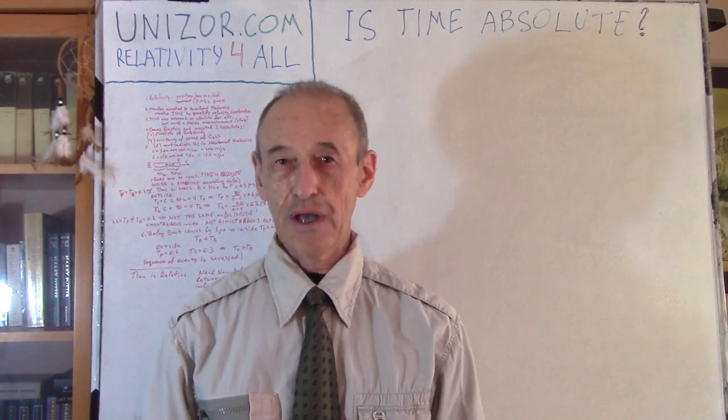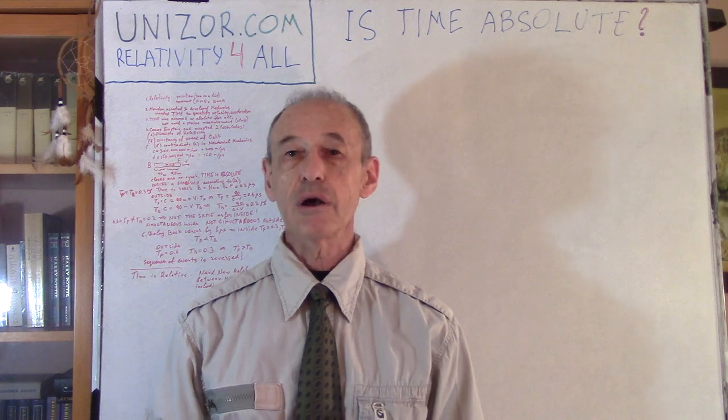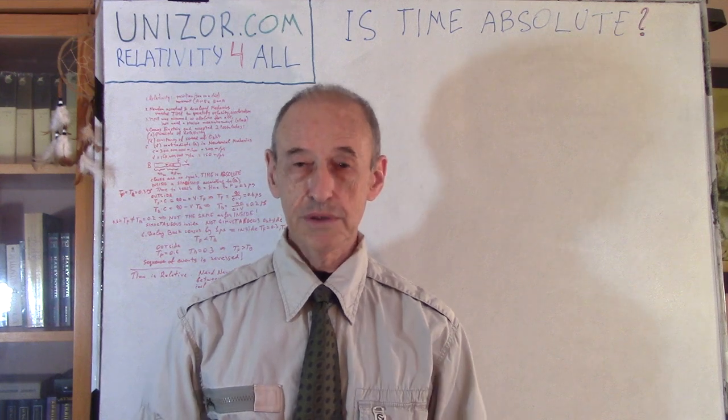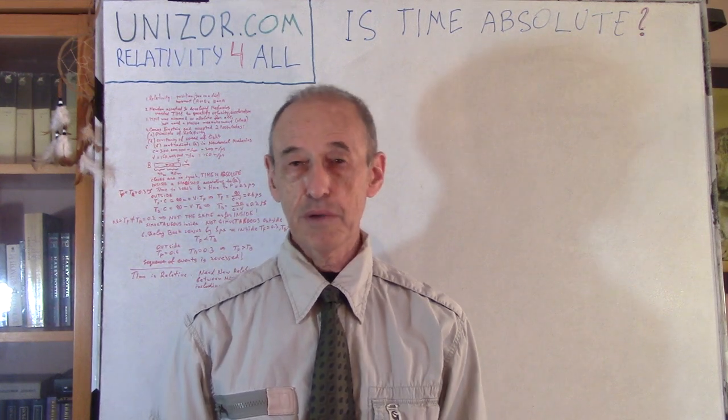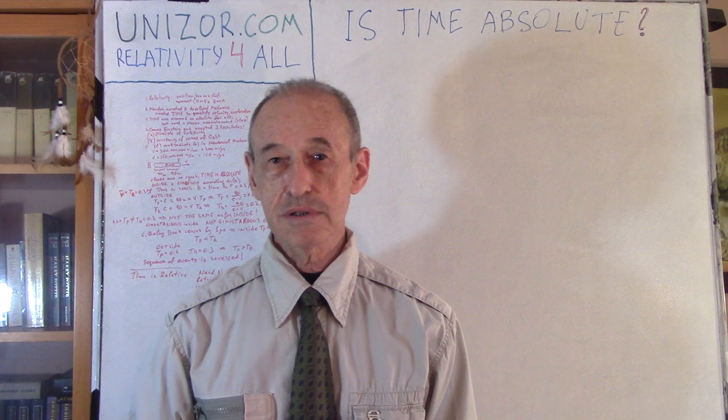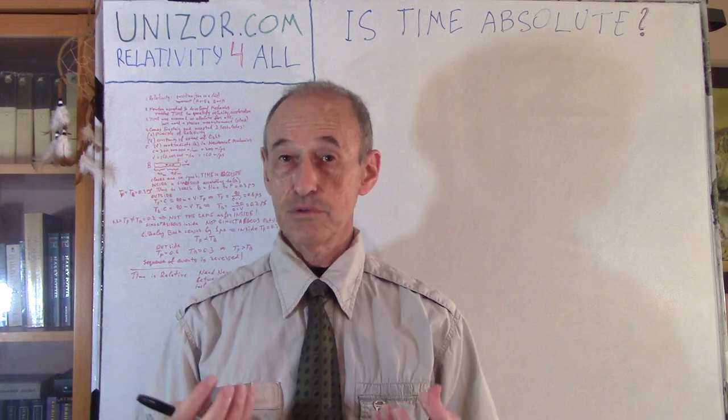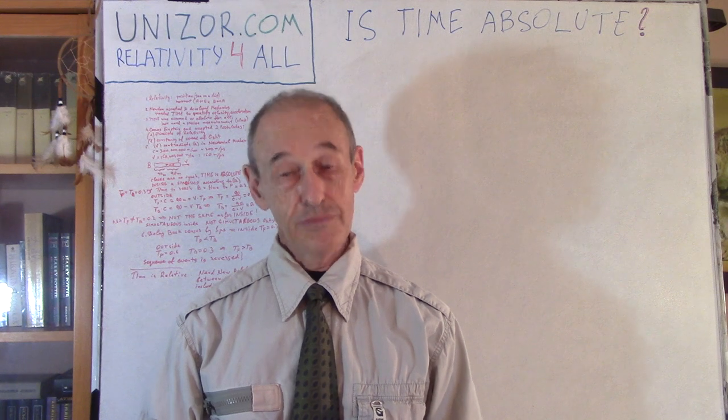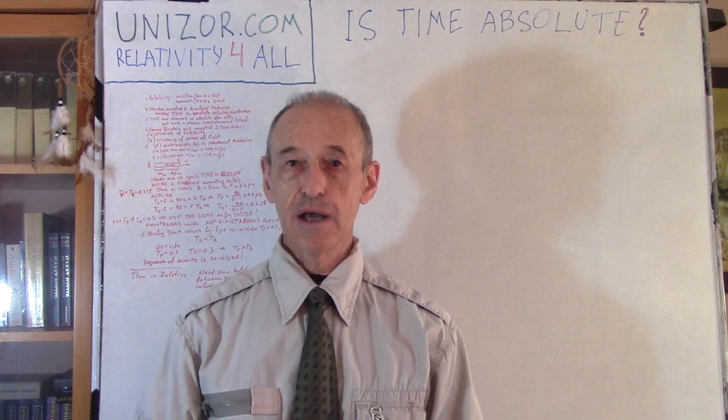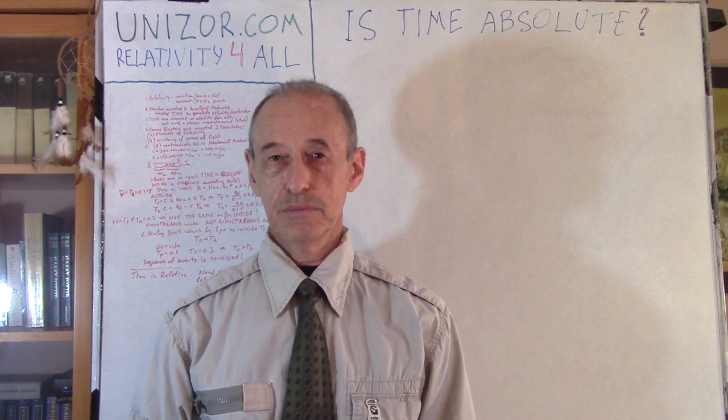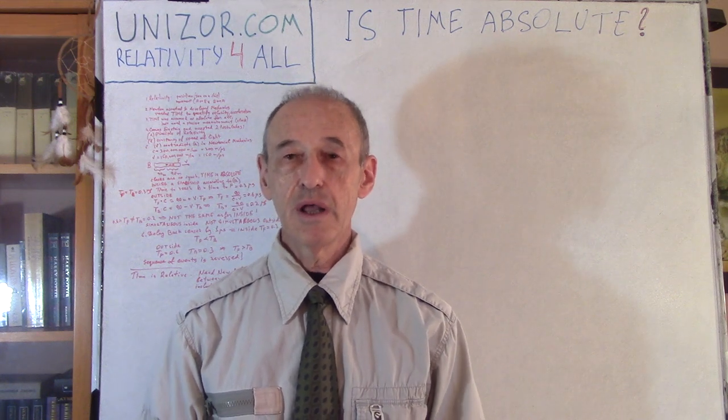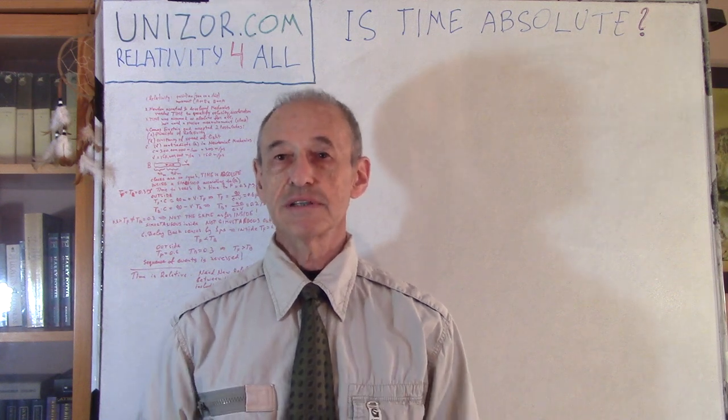What does it mean absolute time? Well, if you have two clocks which are completely synchronous, very good Swiss-made clocks, and one of them is in possession of one person and the other is in possession of another person, and that other person goes somewhere else, returns back, and the clocks are supposed to be showing exactly the same time, if they're good clocks, obviously. In this particular sense, the time was always considered to be absolute.